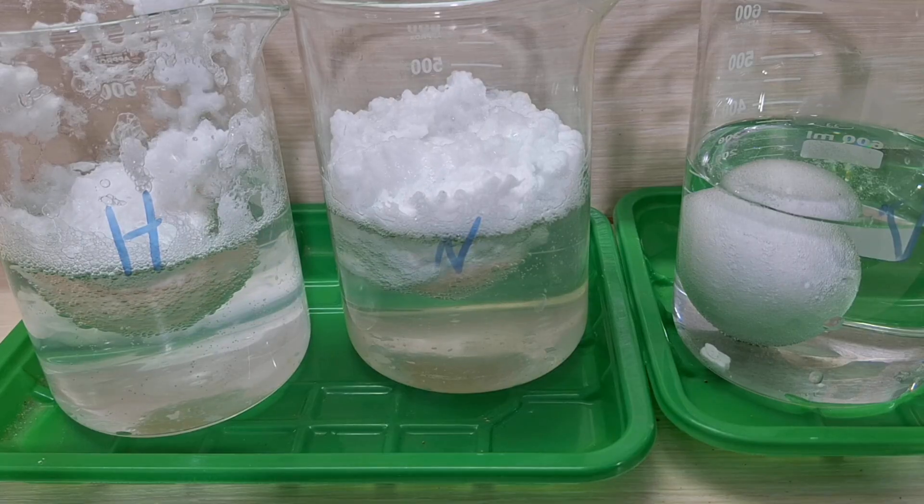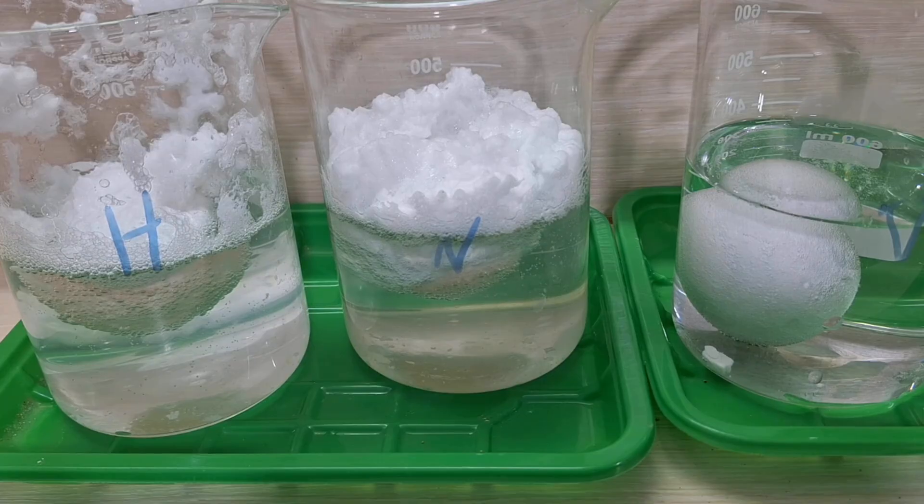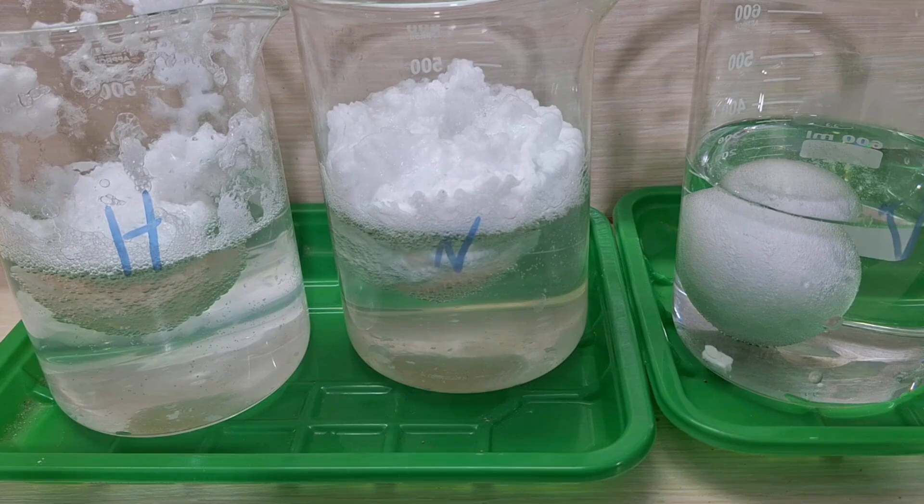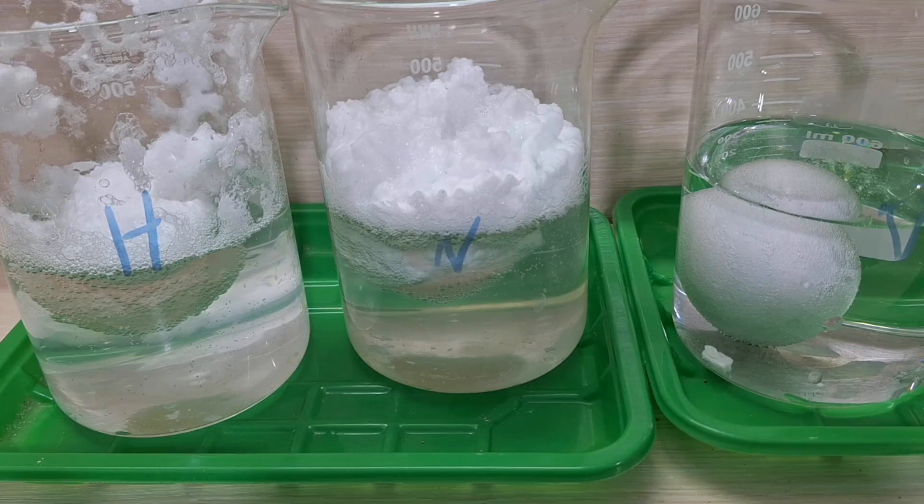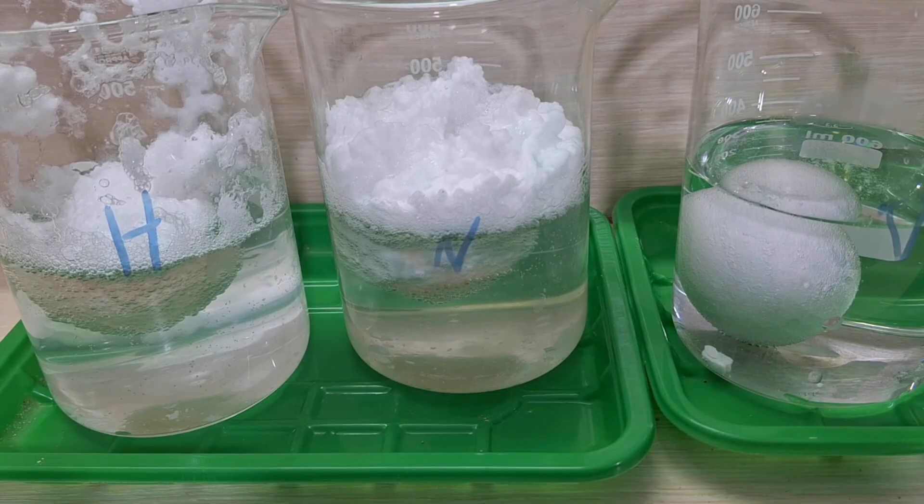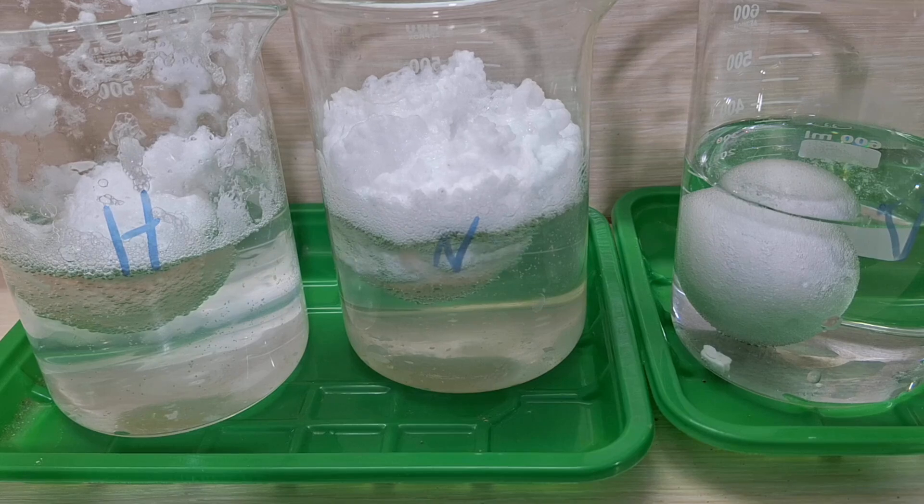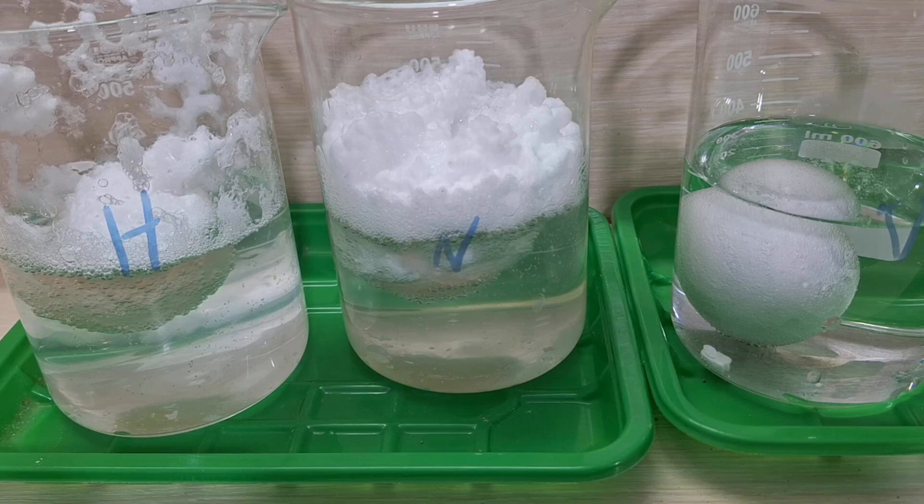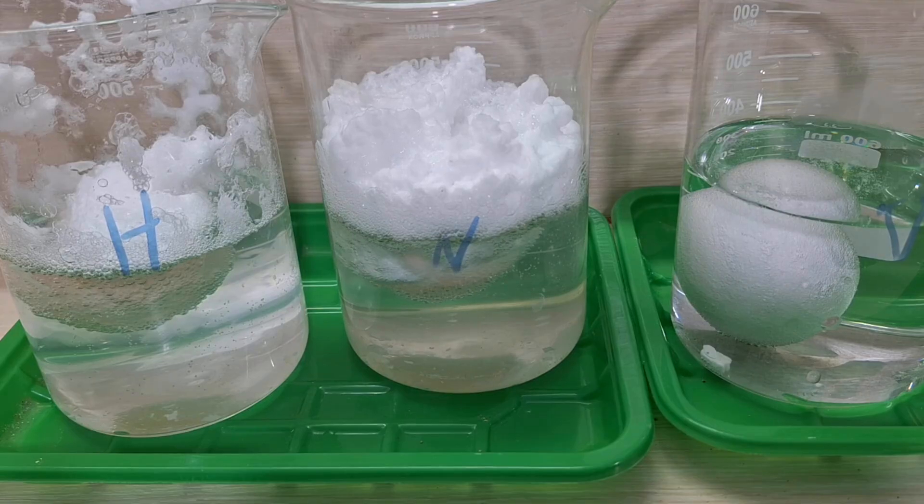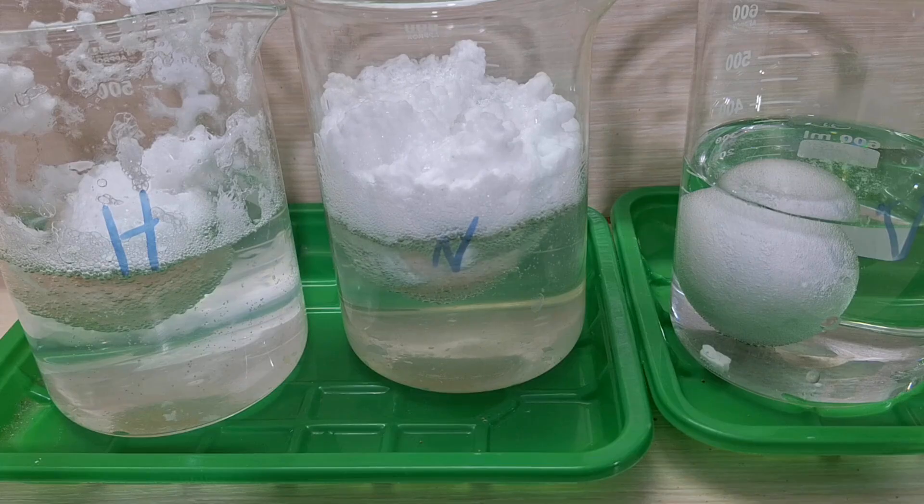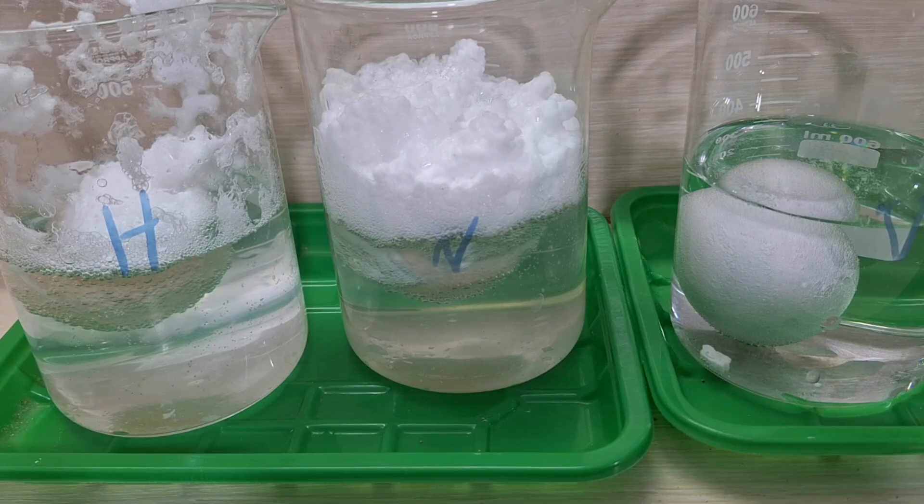For example, if you have a cyanide solution containing gold, you can precipitate it using zinc powder and copper sulfate. This method works, but the result may not be pure gold. However, if you take that gold-containing cyanide solution and run it through an electrolysis system, then with the help of proper electrolyte additives, pure metallic gold will begin to deposit onto the cathode plates.